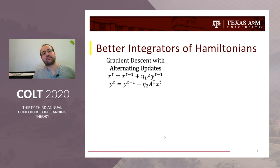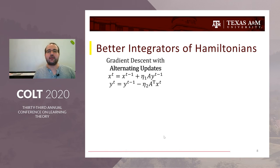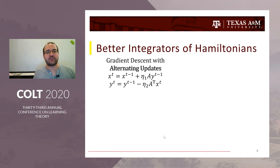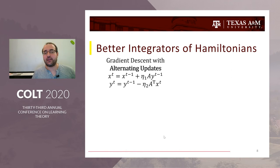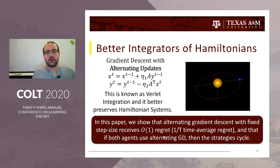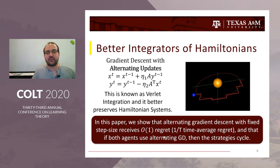Specifically, Verlet integration is a better approximation for Hamiltonian systems, and it corresponds to updating position and momentum in an alternating setting. In the analog to physics I established, agent one represents position and agent two represents momentum — hence we get the alternating gradient descent update. This system gets a much better approximation of the continuous-time system, leading to those nice properties.